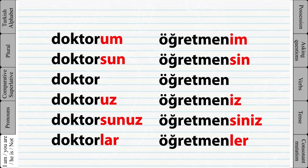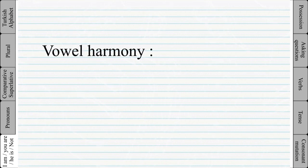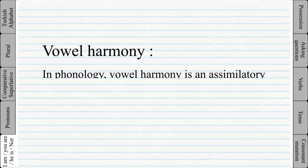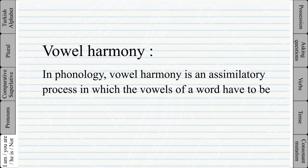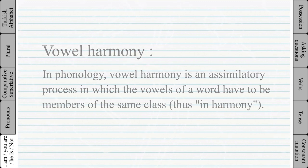Notice how the vowel changed. The reason we use a different vowel is because there is something in Turkish called vowel harmony. The vowel harmony in phonology is an assimilatory process in which the vowels of a word have to be members of the same class — thus in harmony. The rules are like this.